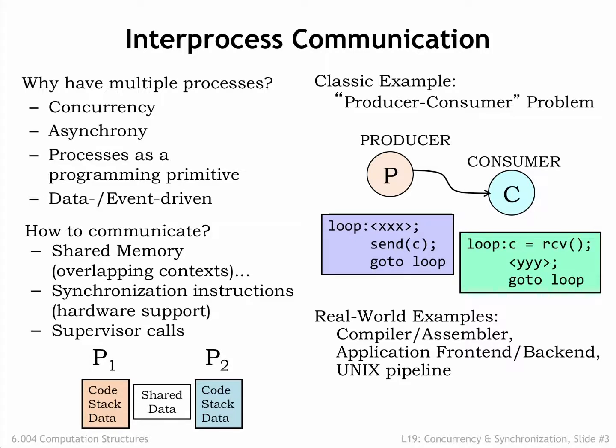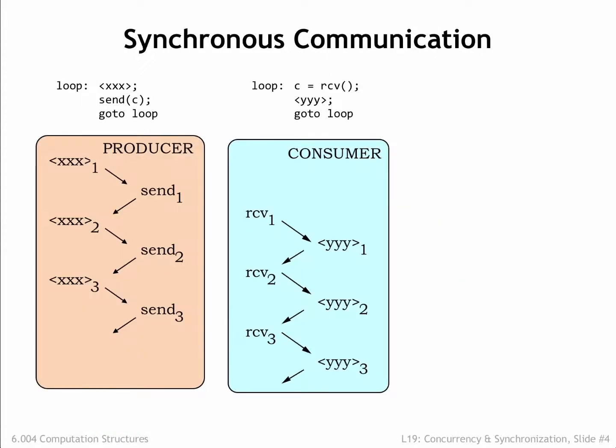The information passing between the producer and consumer could obviously be much more complicated than a single character. For example, a compiler might produce a sequence of assembly language statements passed to the assembler to be converted into the appropriate binary representation. The user interface frontend for a video game might pass a sequence of player actions to the simulation and rendering backend. The notion of hooking multiple processes together in a processing pipeline is so useful that the UNIX and Linux operating systems provide a pipe primitive that connects the output channel of the upstream process to the input channel of the downstream process.